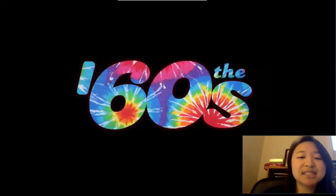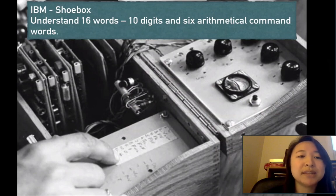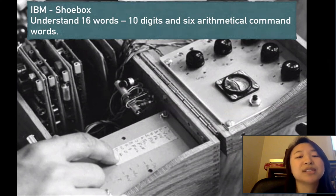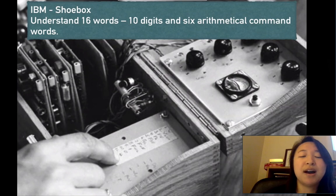In the 60s, specifically 1962, IBM made its own software called Shoebox, a minor improvement. Instead of recognizing only 10 words, it could recognize 16 — the 10 digits plus six command words such as plus, minus, and multiply — so it could also perform mathematical functions.